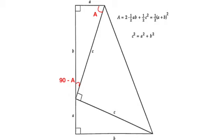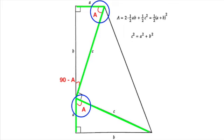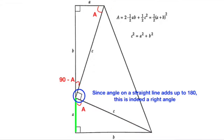Using the SSS triangle congruence criterion above, since these two right-angle triangles are the same, we see that the angle bounded between sides with lengths A and C must be capital A. And so, using the fact that angles on a straight line sum to 180 degrees, we see that this angle is indeed a right angle.